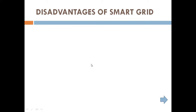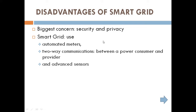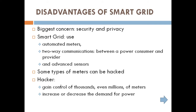The disadvantages: the biggest concern is security and privacy. Smart grid uses automated meters, two-way communications between power consumers and providers, and advanced sensors, so there are an increased number of gadgets which need to be maintained. Some types of meters can be hacked, and a hacker can gain control of thousands or even millions of meters. One hacking incident can bring down power for an entire city or region, increasing or decreasing the demand for power.